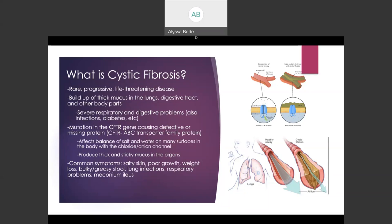Without the CFTR protein functioning normally, cells can't move chloride, which is a component of salt, to the cell surface. Without chloride there to attract water, a thick and sticky mucus can build up in different tissues and organs, especially the lungs and the digestive tract, where there are severe respiratory and digestive problems associated with cystic fibrosis. In the lungs specifically, it can interfere with breathing because the mucus can block airways and cause respiratory infections or inflammation when the mucus traps germs and bacteria. In the pancreas, the mucus buildup can prevent the release of digestive enzymes, which affects food and nutrient absorption, resulting in malnutrition and poor growth.